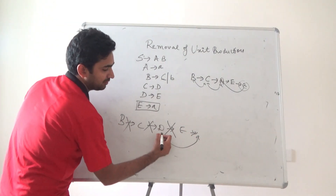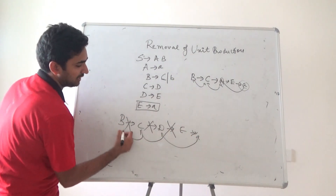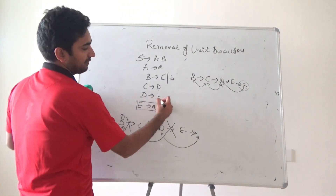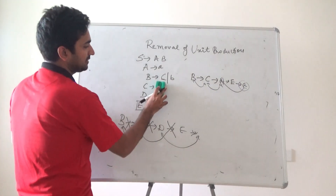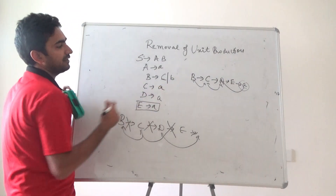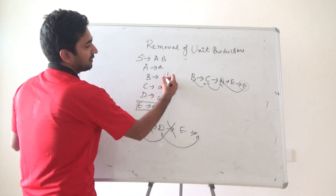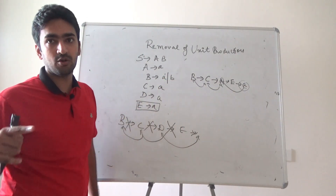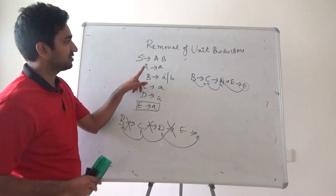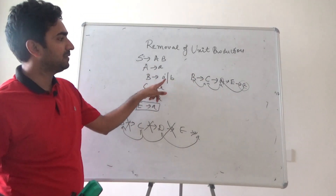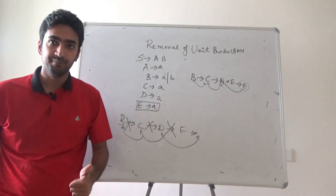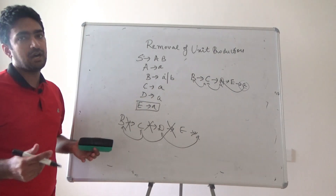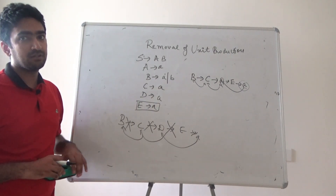Since E is producing small a, that value is assigned to D; D's value is assigned to C; and C's value is assigned to B. So D is generating small a, C is generating small a, and B is generating small a. You will not remove rules that are already there — A was already generating small a, and B was already generating small b.